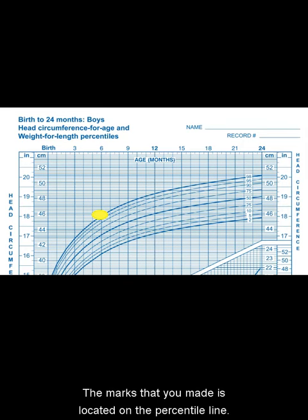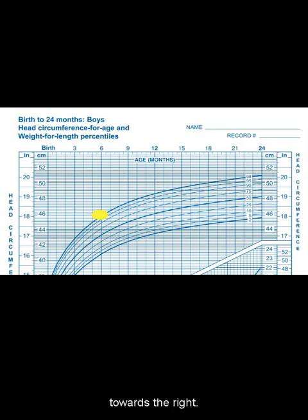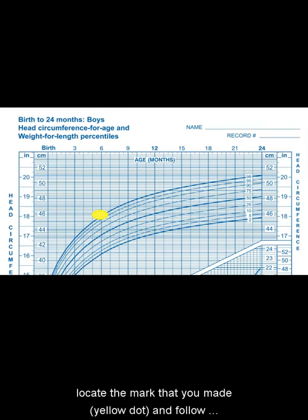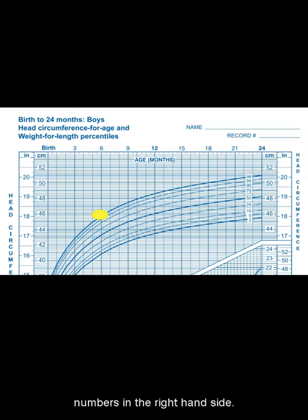The mark that you made is located on a percentile line. You can see that the percentile line curves up and towards the right. To find the percentile, you will locate the mark that you made and follow the line that it is on towards the percentile numbers on the right-hand side.